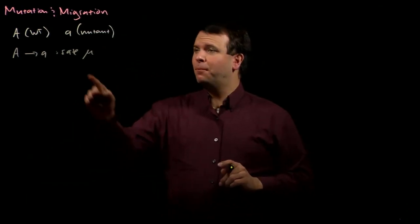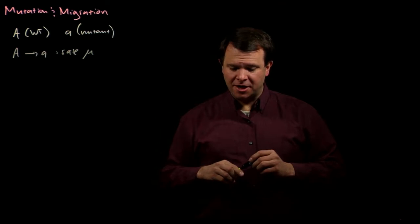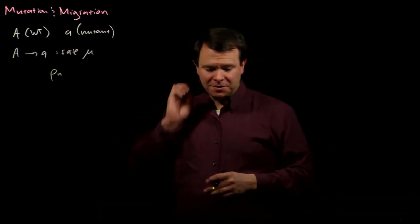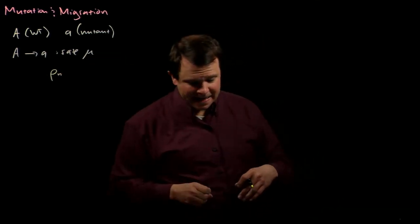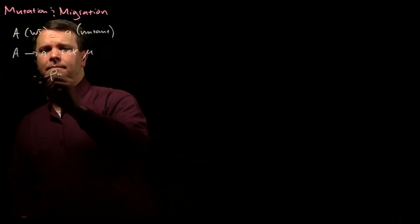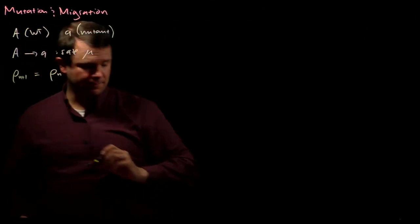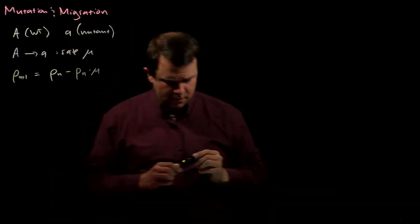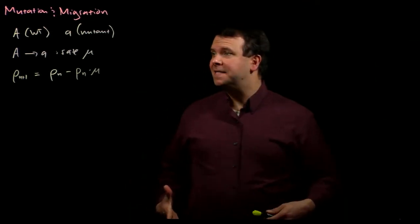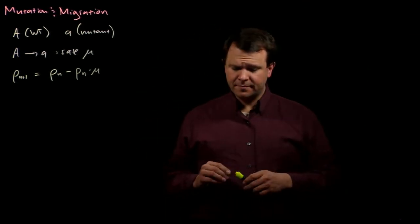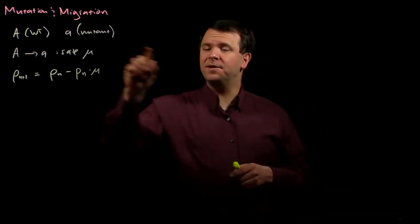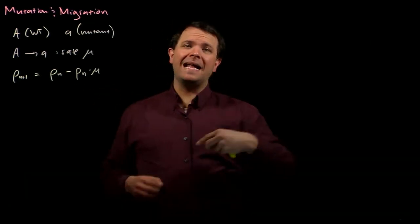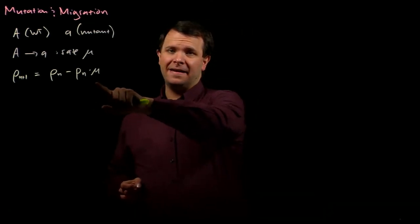That is to say that if the proportion of allele A in a generation is p sub n, then the proportion of the allele A in the next generation, p sub n plus 1, is p sub n minus p sub n times mu. And again, that's because each generation big A alleles mutate to little a alleles with a rate of mu. And so, each generation, the proportion that is lost is p of n times mu.